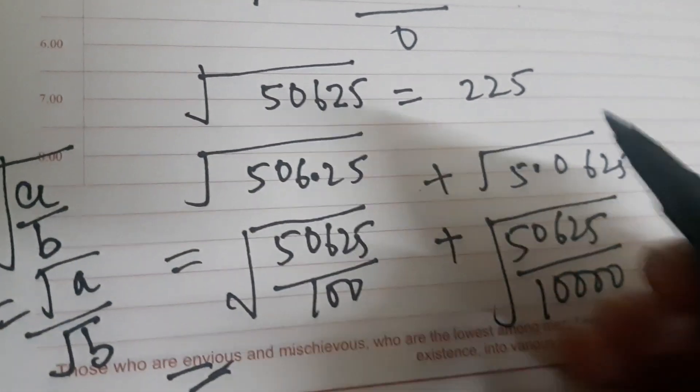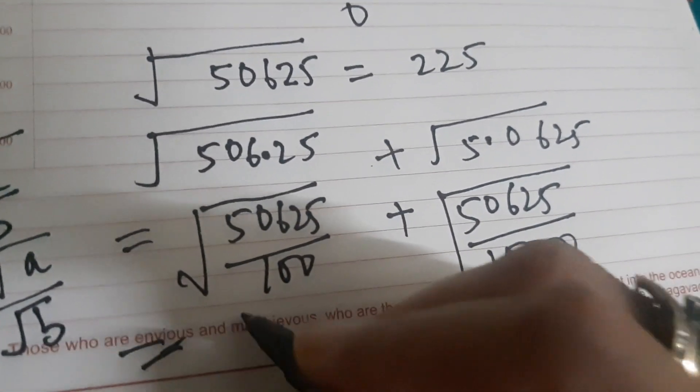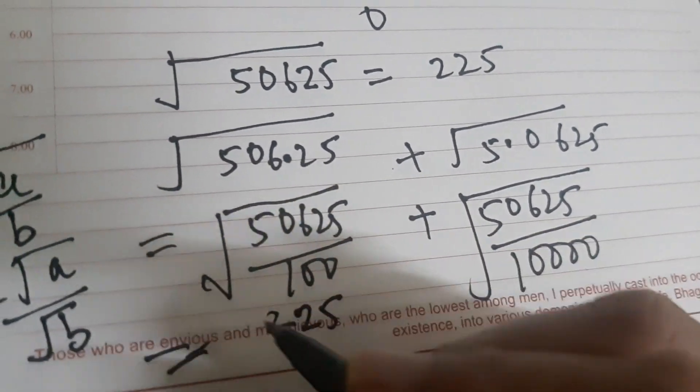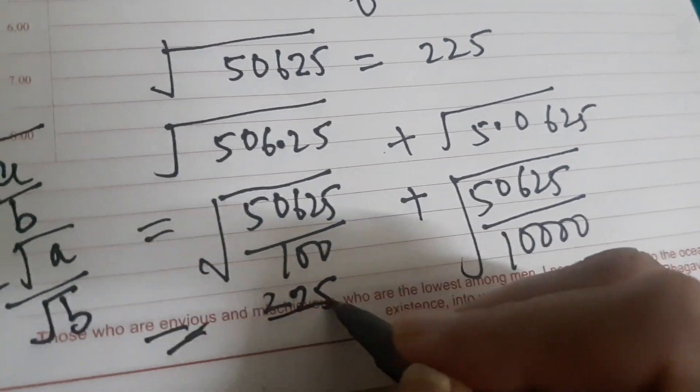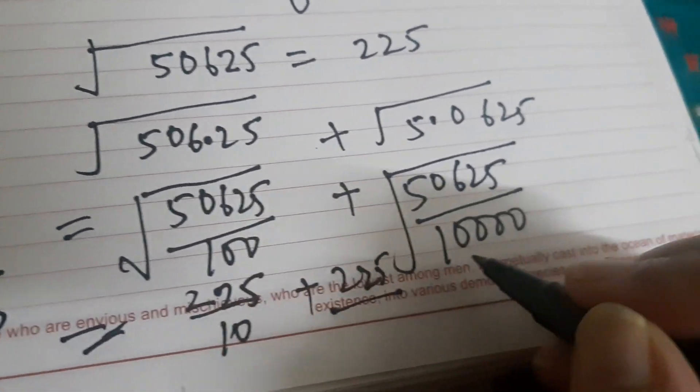So here a and b both are perfect squares. So here this is 50625, so I can write it as 225, because I have to find the square root, and square root of 100 is 10, plus 225 divided by square root of 100.